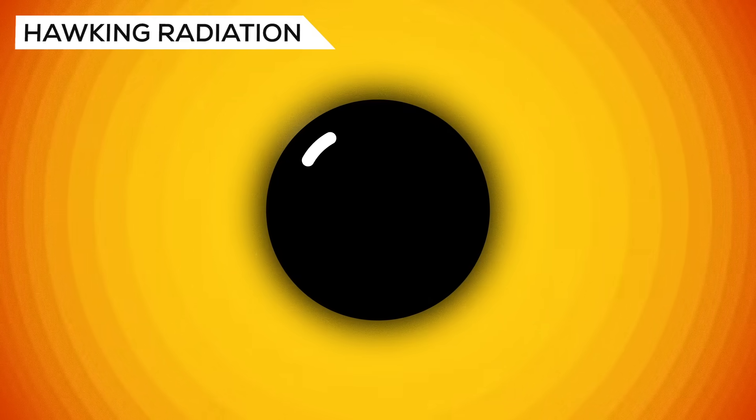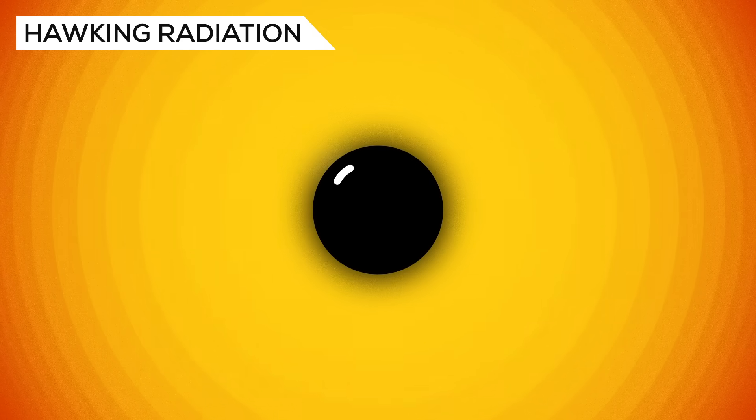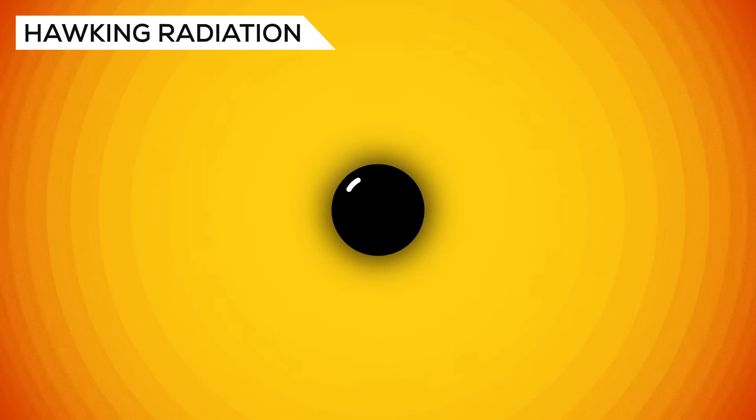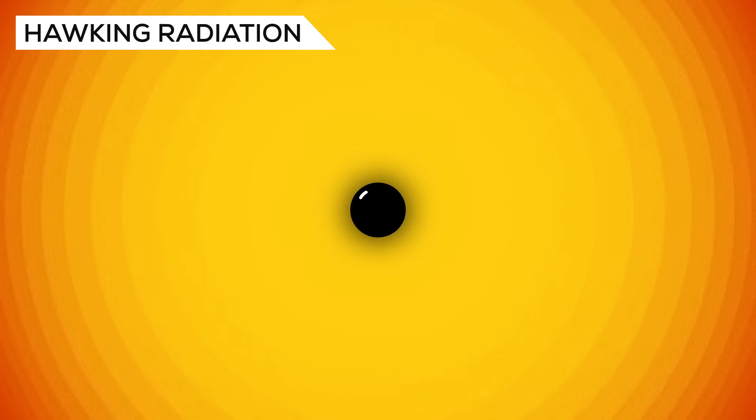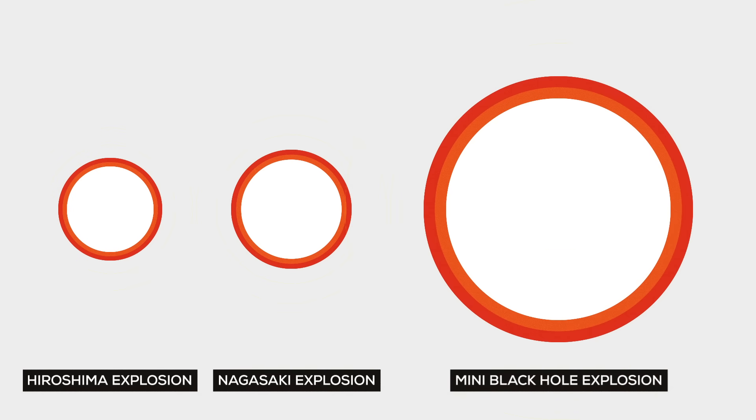And a small black hole would also have an unimaginably short lifetime to decay by Hawking radiation. It would radiate away what little mass it has in 10 to the power of minus 23 seconds. Its 5 grams of mass will be converted to 450 terajoules of energy, which will lead to an explosion roughly three times bigger than the atomic bombs dropped on Hiroshima and Nagasaki combined.